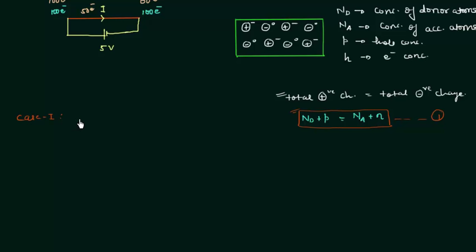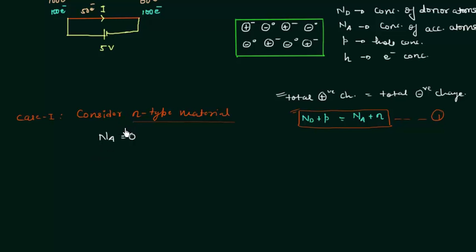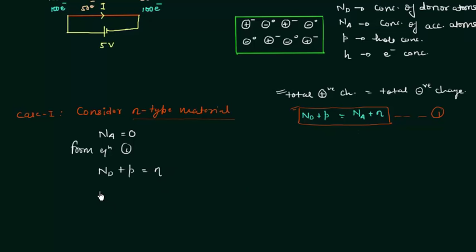Case 1: n-type material. We get an n-type material by doping an intrinsic semiconductor with a pentavalent impurity — no trivalent impurity is added. Hence N_a equals zero. Substituting N_a = 0 into Equation 1, we get N_d + p = n, or N_d = n − p.